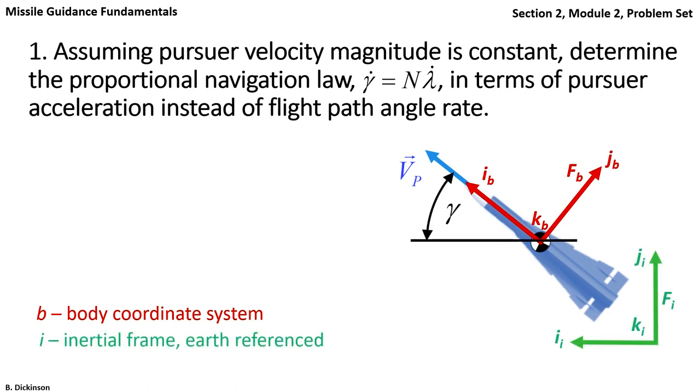We'll need an inertial reference frame. And note that the flight path angle gamma is the angle of the velocity vector relative to the inertial frame.